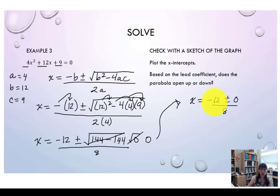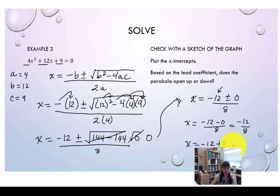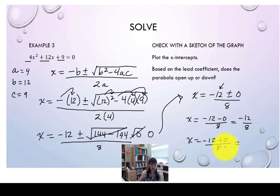When you add 0 or subtract 0, we're not changing the value of this first term. So if we expand these two answers: negative 12 minus 0 over 8, and x equals negative 12 plus 0 divided by 8.